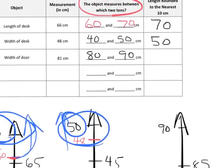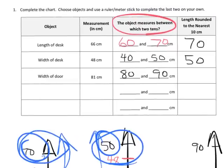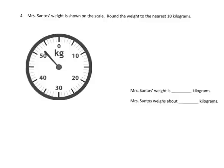You got rounding up and rounding down. It's kind of intuitive, isn't it? So this rounds to 80. The last problem in this tutorial: Mrs. Santos' weight is shown on the scale. Round the weight to the nearest 10 kilograms.